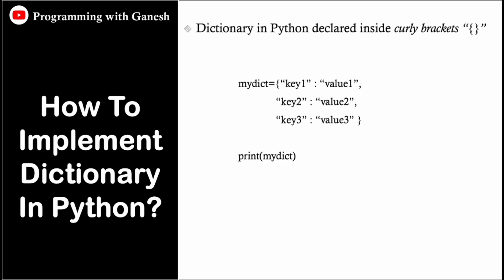Now let's see how to implement the dictionary data type in Python. To declare a dictionary we use curly braces, and inside we store key-value pairs. The key and value are separated by a colon. You can use multiple values inside a list, or a nested dictionary. A comma separates two different key-value pairs.